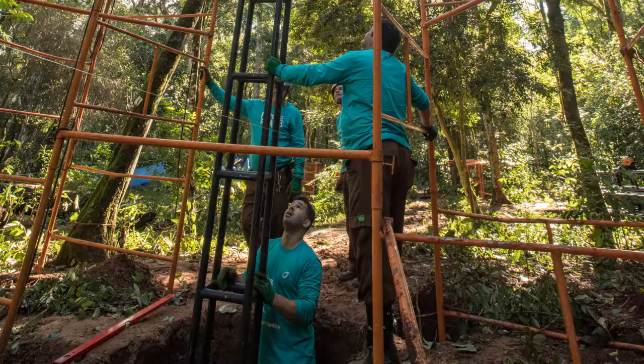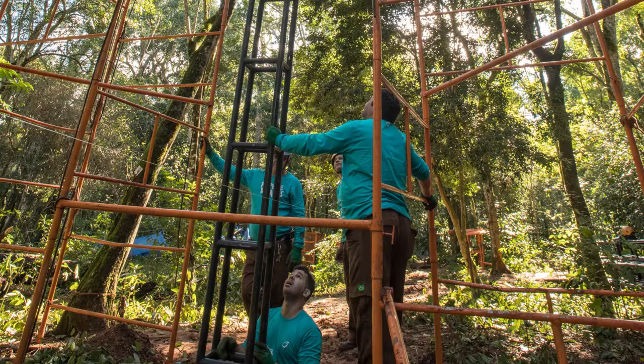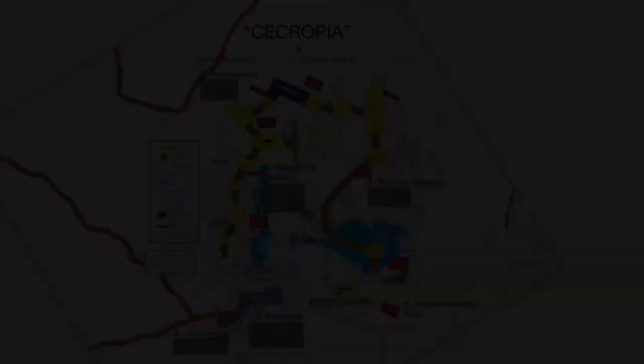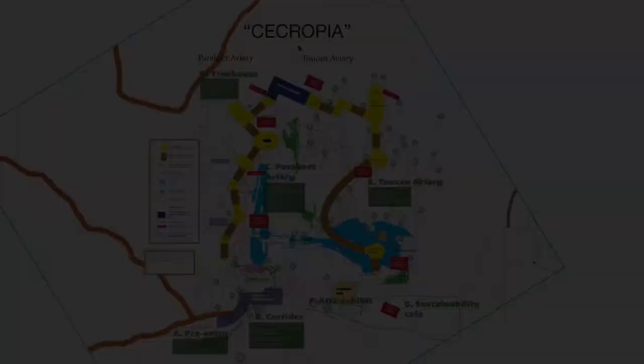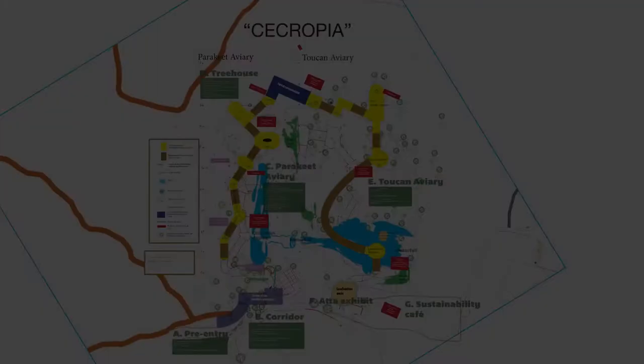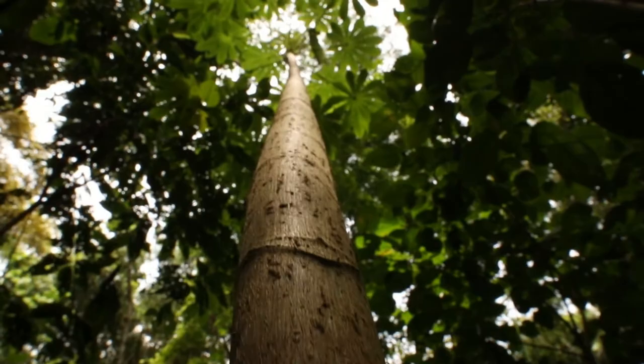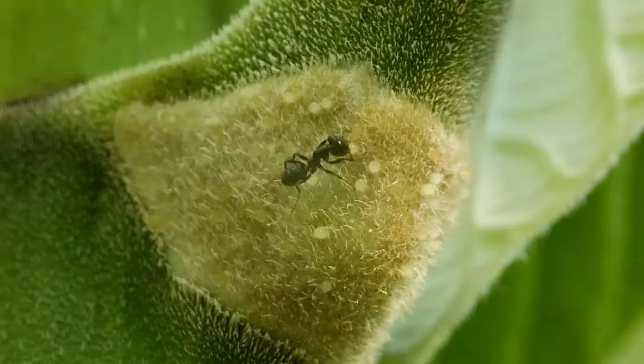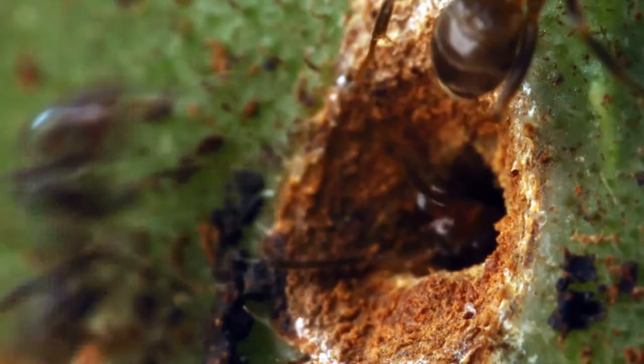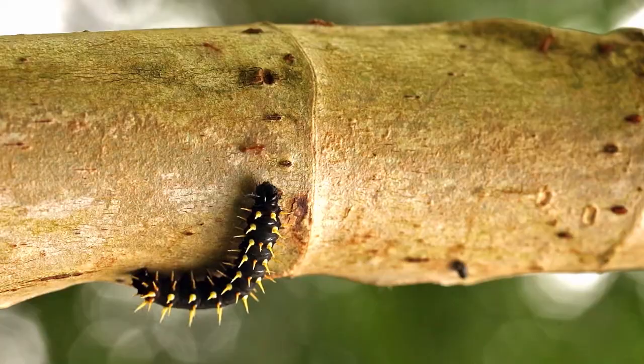They are dedicating a massive new enclosure to educate visitors about these relationships. The enclosure's entrance will feature one of the Cecropia tree's most interesting relationships, its mutualistic symbiosis with Azteca ants. Trees provide food and hollow stems for the ants to live in, and ants protect the plant from herbivores and vines.